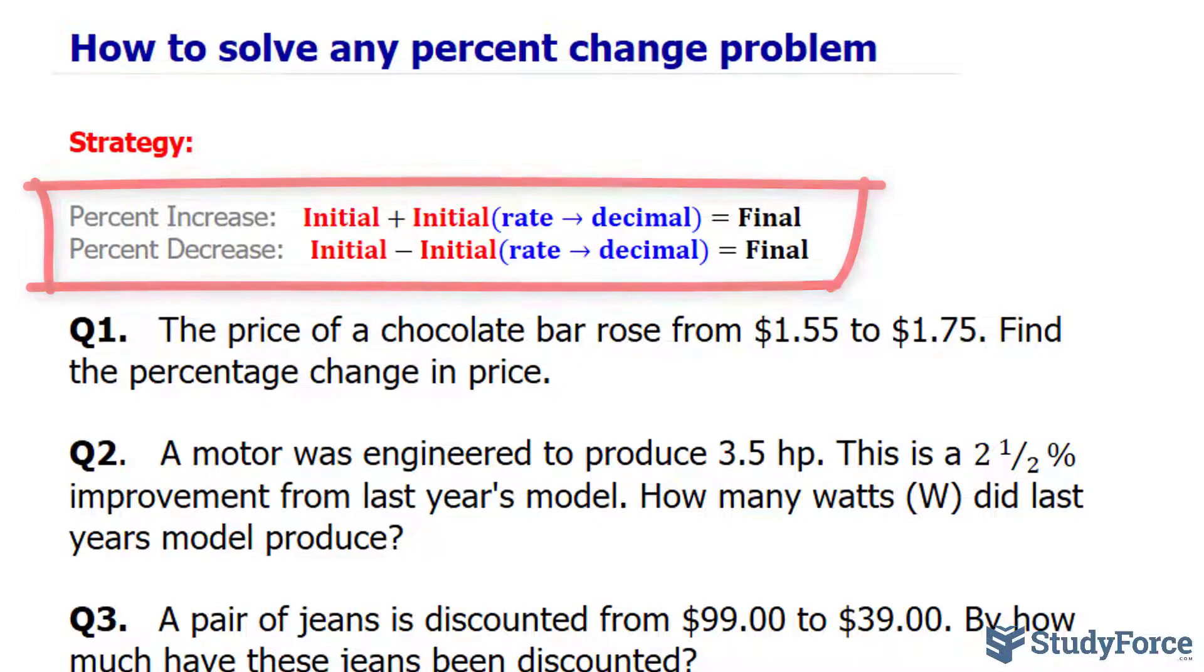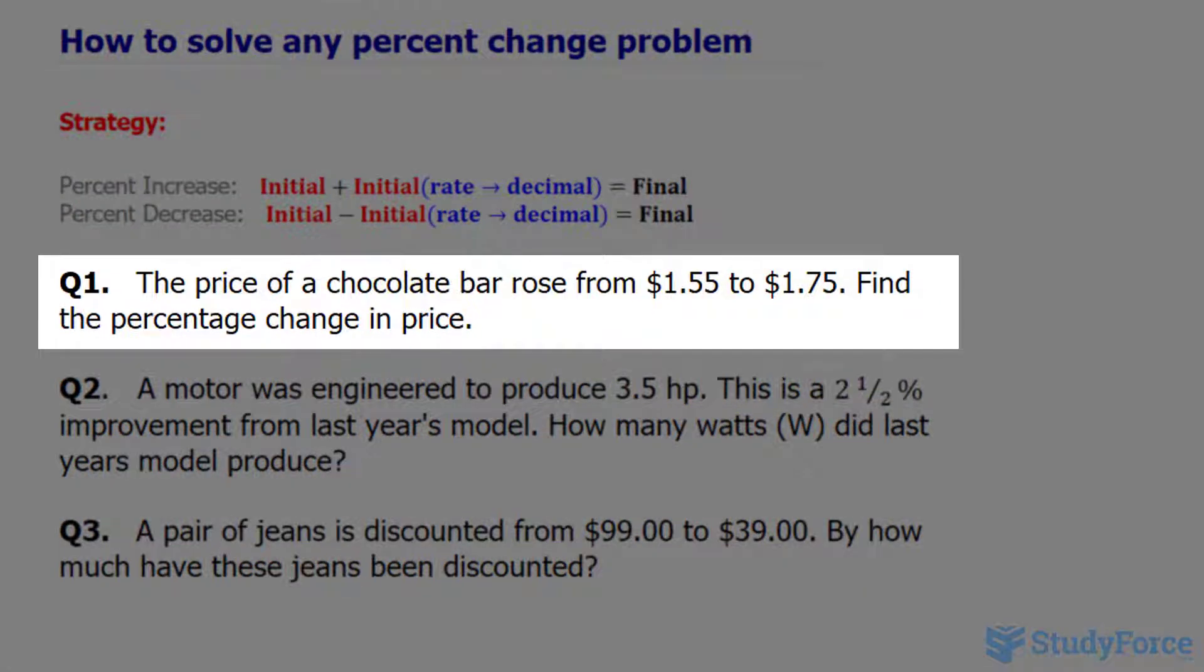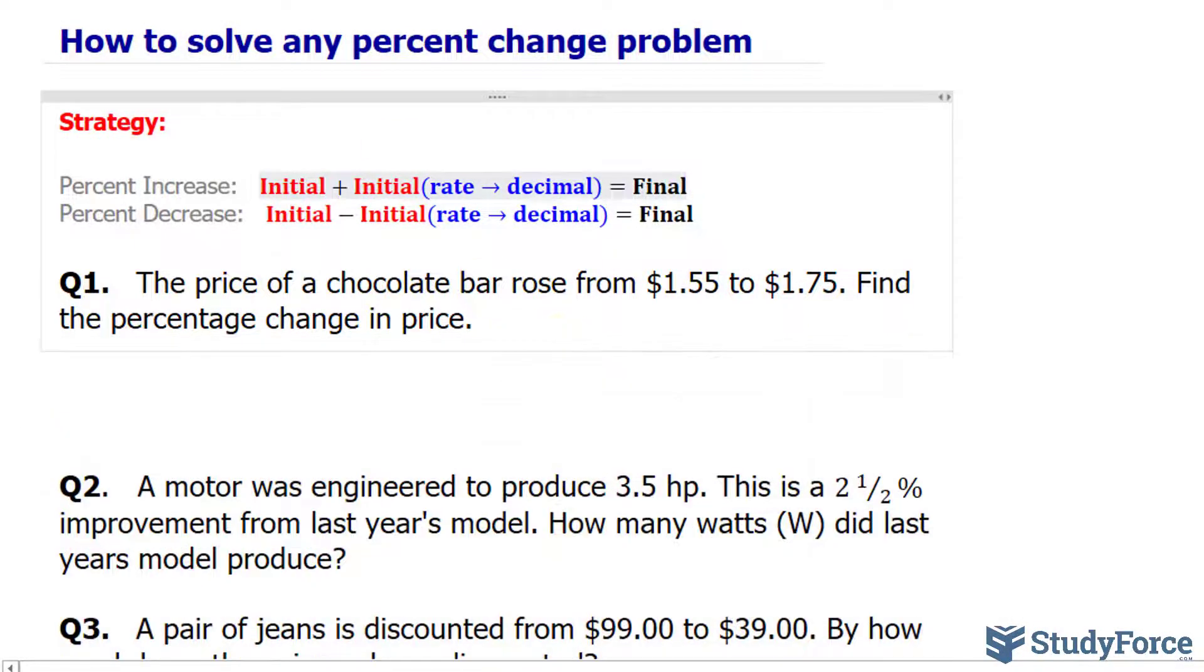So in question number one, we're being asked, the price of a chocolate bar rose from $1.55 to $1.75. Find the percent change in price. As you can tell, there is an increase from $1.55 to $1.75, and there's a key word here, rose, that indicates that.